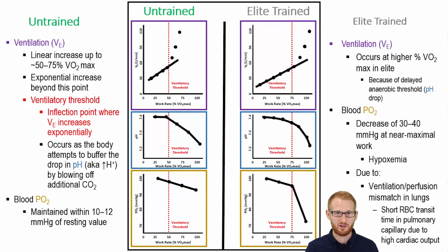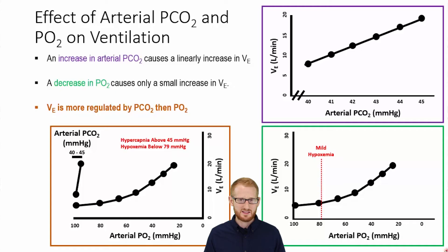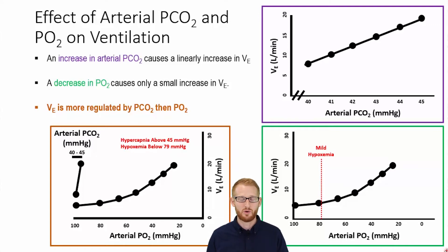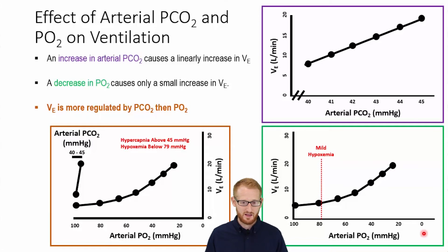This is not something to be too worried about, and it doesn't occur in a normal trained individual either. Even college-caliber trained endurance athletes are not going to see this drop in PO2 — this is only the most elite and trained athletes. Let's talk about O2 and CO2 and what actually stimulates the chemoreceptors, which drives much of the continual increases in ventilation as we exercise and increase intensity. Here we have ventilation versus partial pressure of CO2, and ventilation versus partial pressure of oxygen.